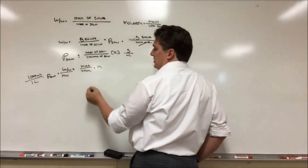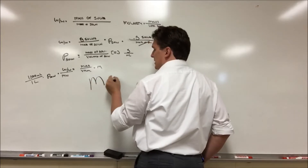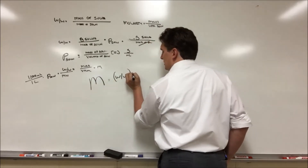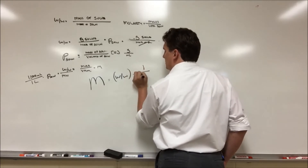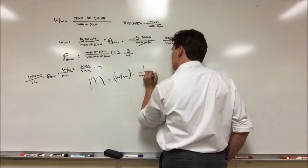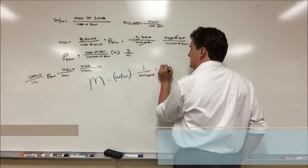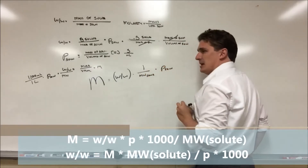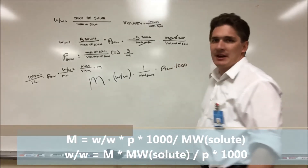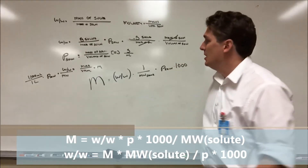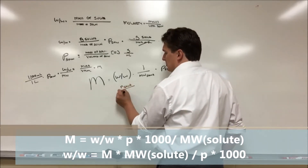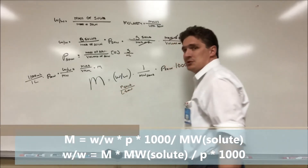So to convert from weight fraction to molarity, take your weight fraction, multiply by one over the molecular weight of the solute, multiply by the density of the solution, and multiply by a thousand to get the correct units. This gives you moles of solute per liter of solution, which is molarity.